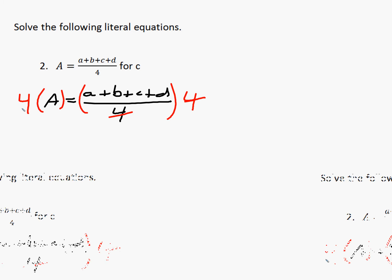So this simplifies. On the left side, we just have 4A. On the right side, this 4 canceled, so we just have a plus b plus c plus d.